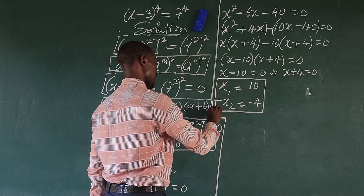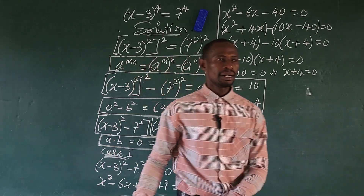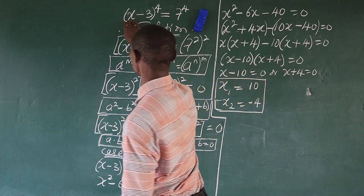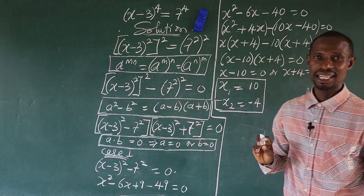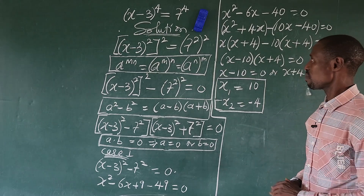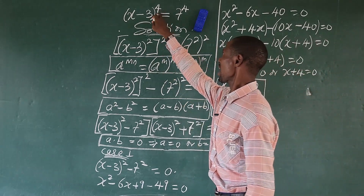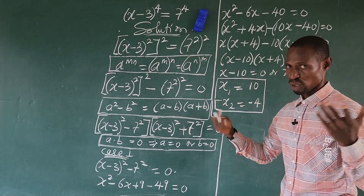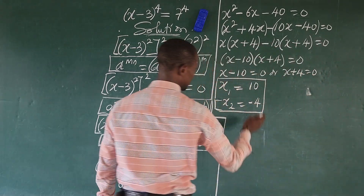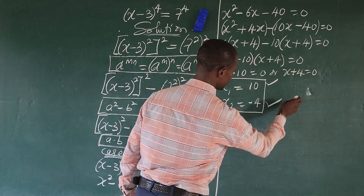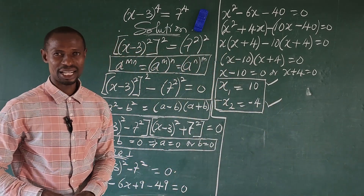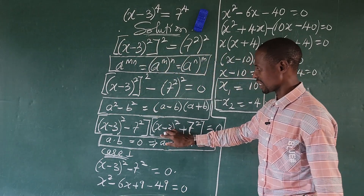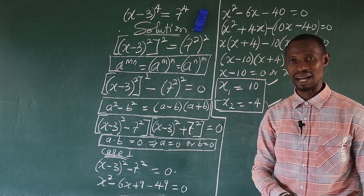Now this confirms what I said — by mainly looking at the expression, you could tell 10 would be one of the answers. And since we have the power of 4, four roots come out, and one of them is 10. So we've gotten two roots — x equals 10 and x equals minus 4. But these are real roots. Now we need to find the imaginary roots, so we take Case 2.